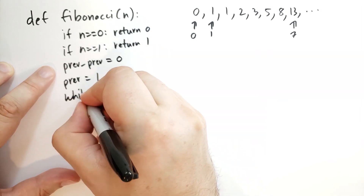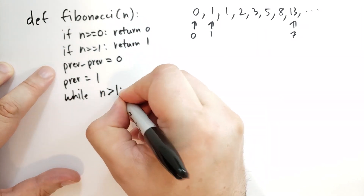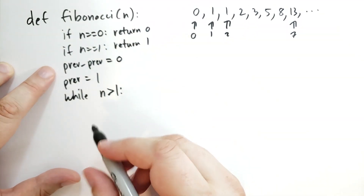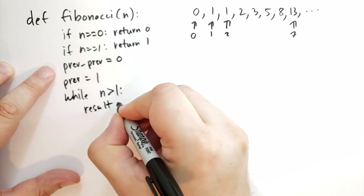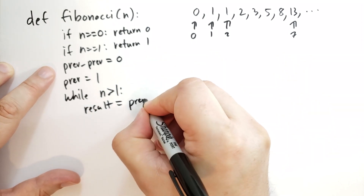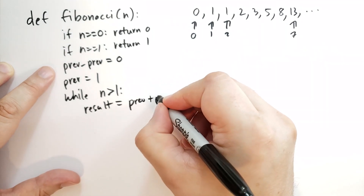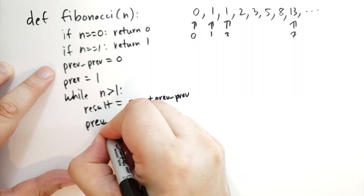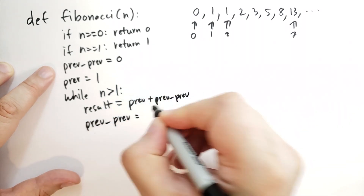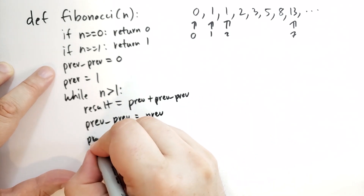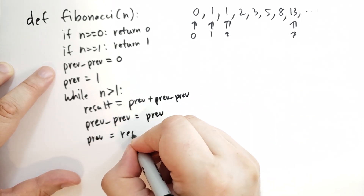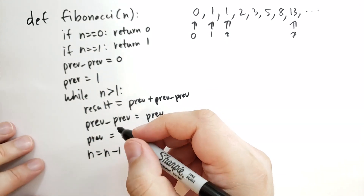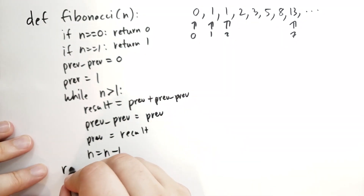While n is greater than 1, result equals prev plus prev_prev. Then prev_prev takes the value of prev, and prev takes the value of the current result. Don't forget to decrement the counter. Finally, when the while statement completes, we return the result.